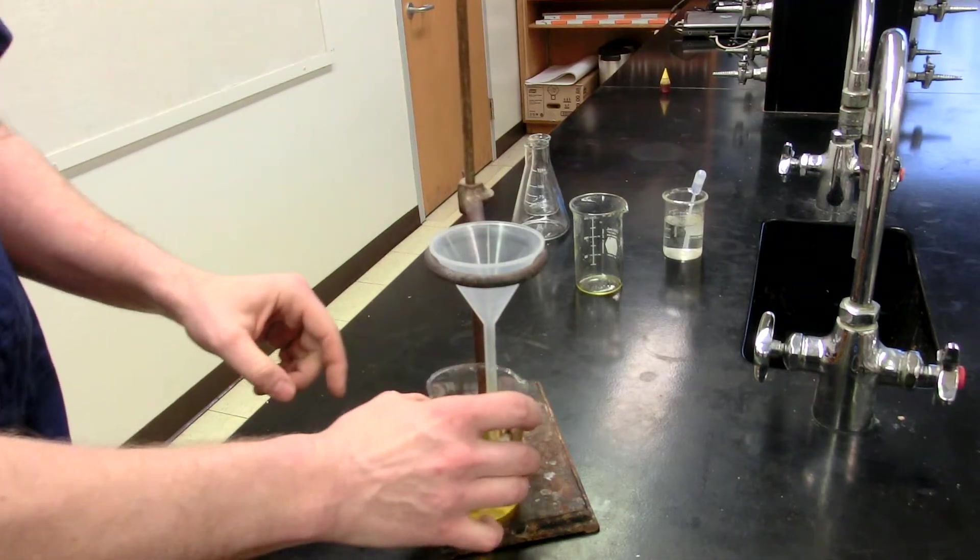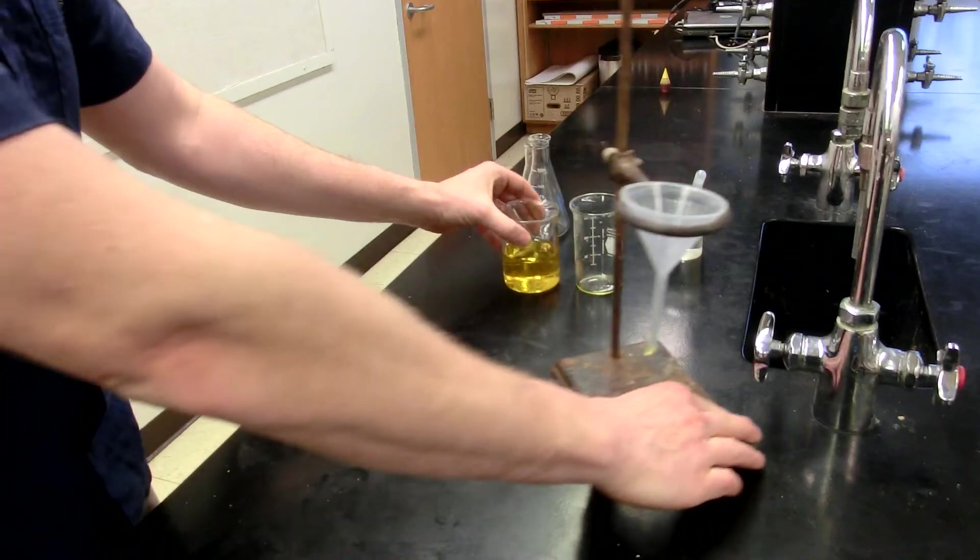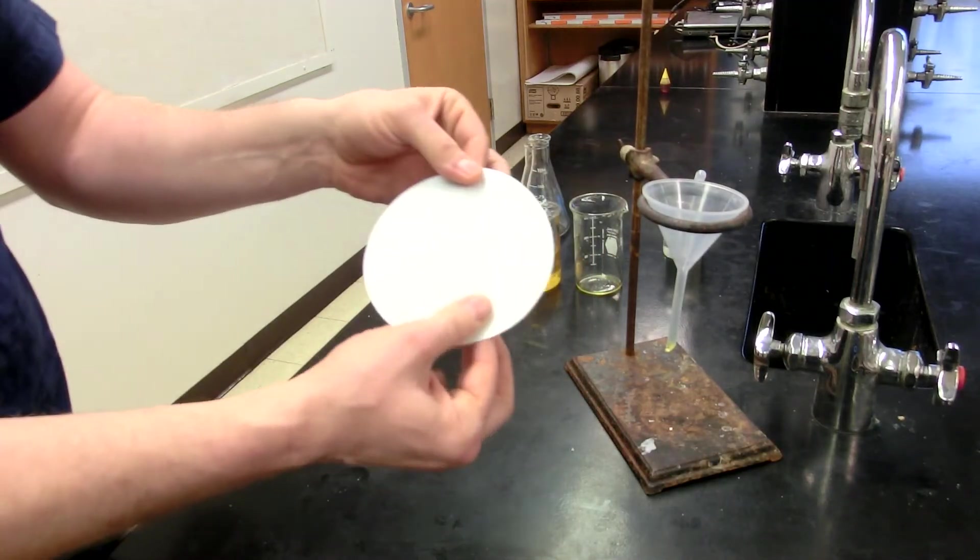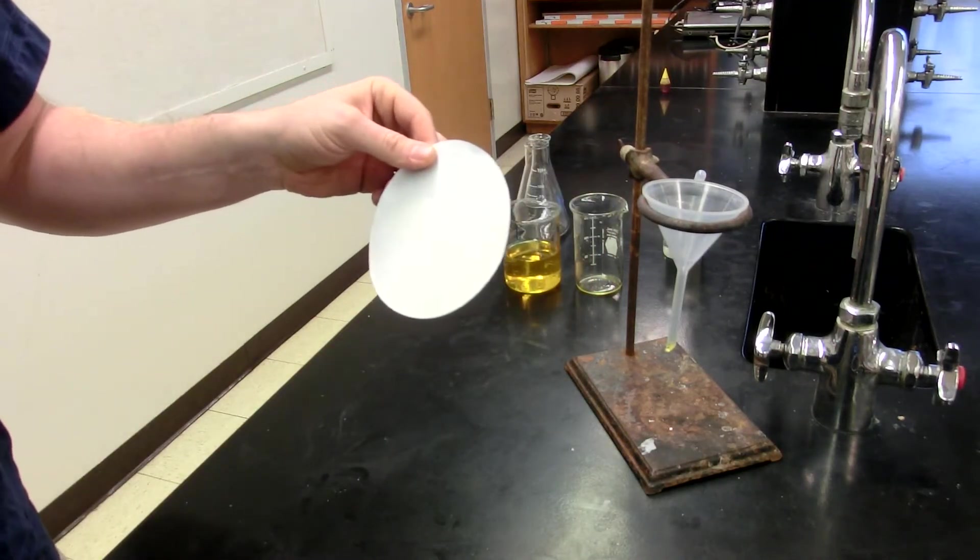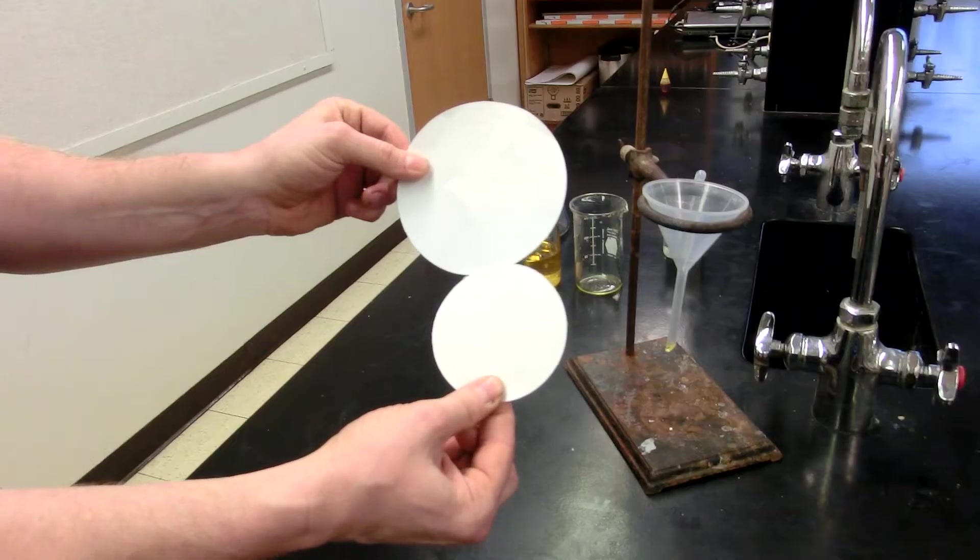So I need something in here to actually block it and that's going to be filter paper. So how do you fold the filter paper? There are, by the way, more than one size of filter paper. Hopefully your instructor will give you the right size for the funnel that you have.